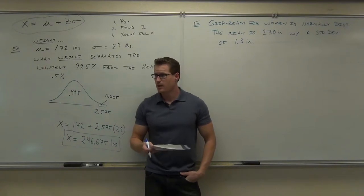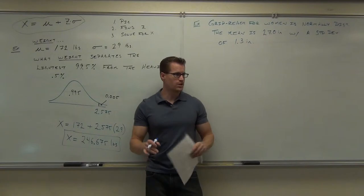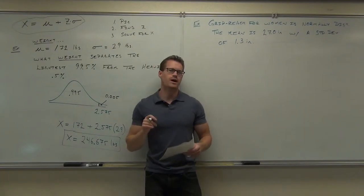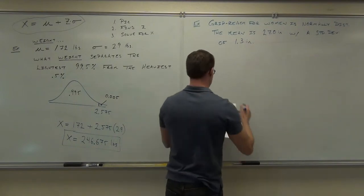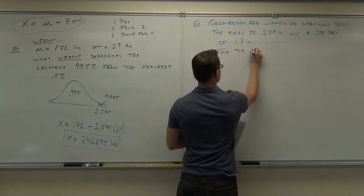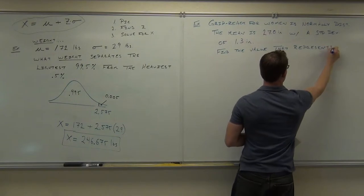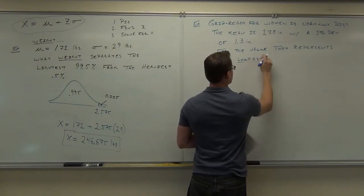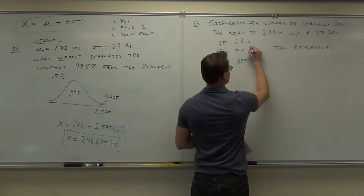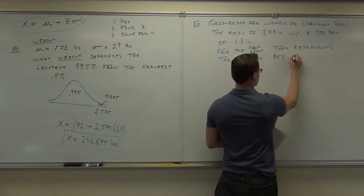Here's what a car company wants to do: they don't want to make it so that only five percent of the people can reach something without moving. They want to make it so that ninety-five percent of the people can reach something without moving. Does that make sense to you? So what we want to do is find the reach that represents the top or longest ninety-five percent of the population. Find the grip reach that represents the longest ninety-five percent of women.